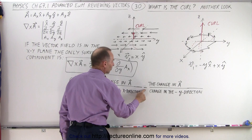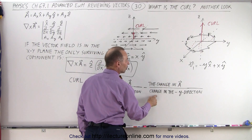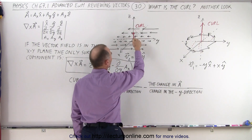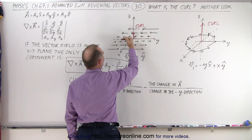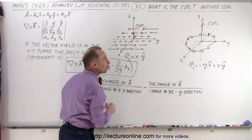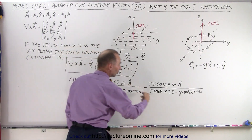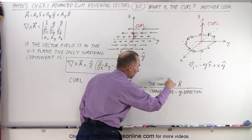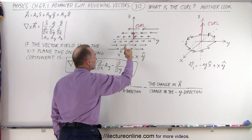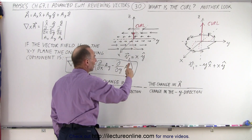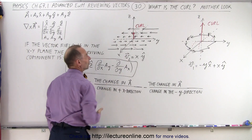Now we subtract the change in the vector field when we move in the negative y direction. Moving in the negative y direction, there is no change in the curl — that's a non-contributing term; it doesn't contribute anything in this vector field. Only the first term contributes, and so that will be the magnitude of the curl, with the direction pointing in the positive z direction.